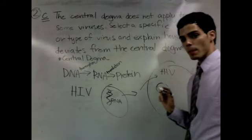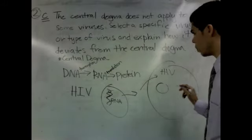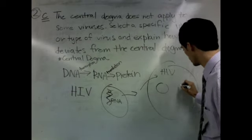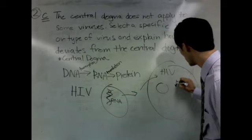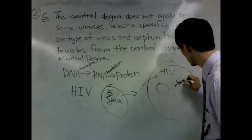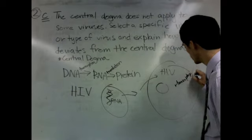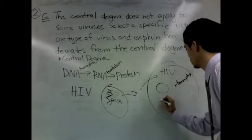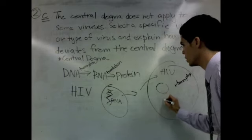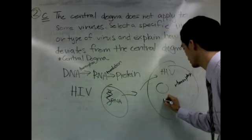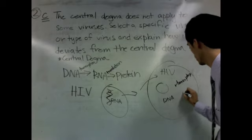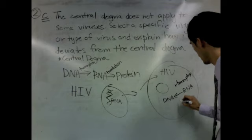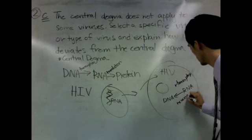But HIV has evolved to overcome this by encoding a protein called reverse transcriptase. This enzyme catalyzes the formation of DNA from RNA. And this is called reverse transcription.